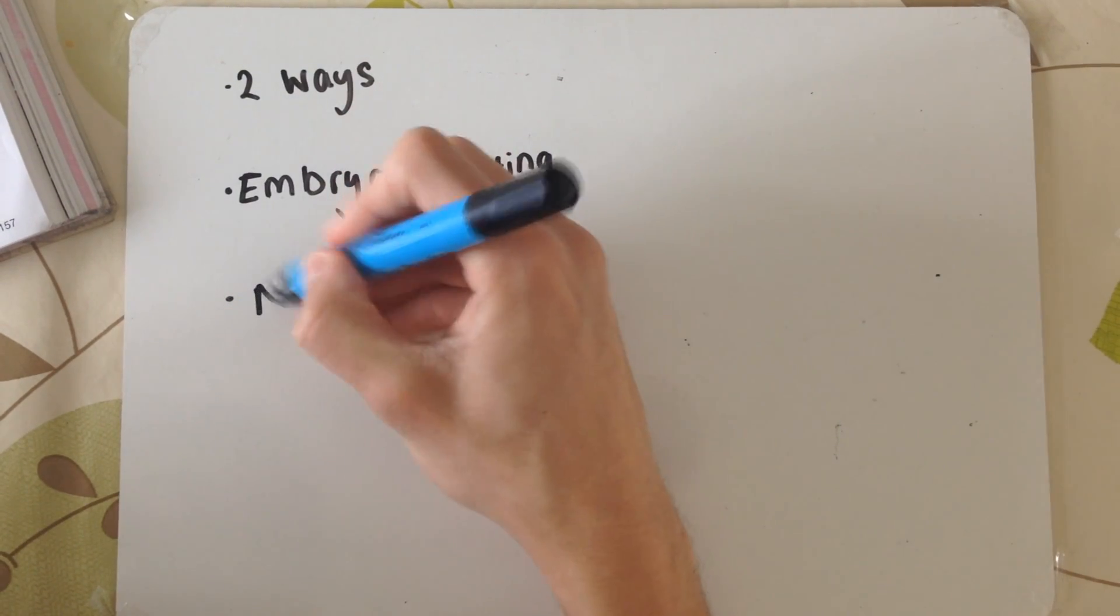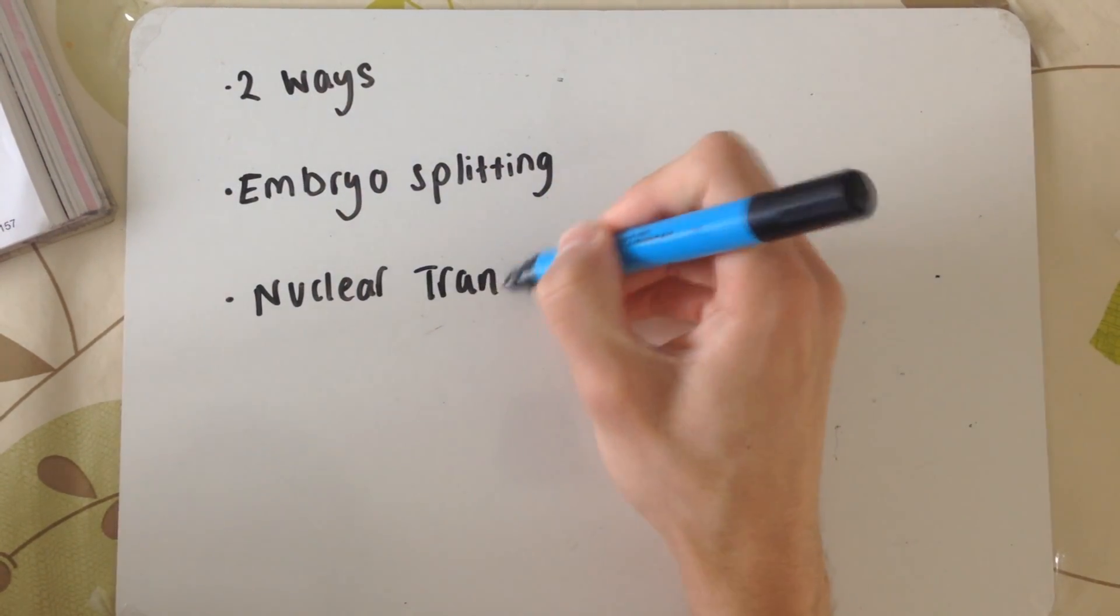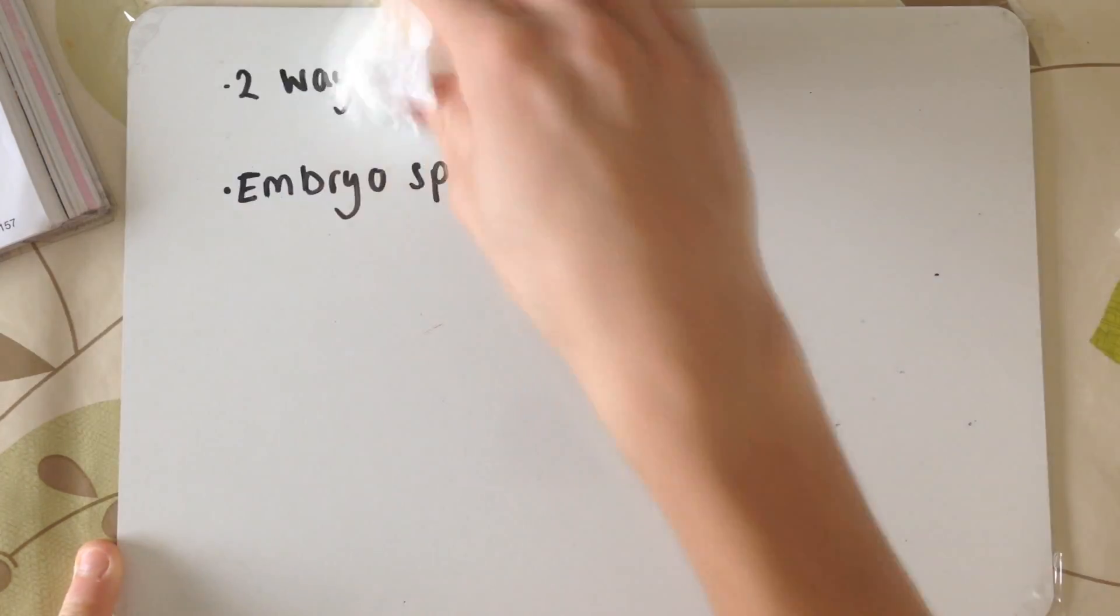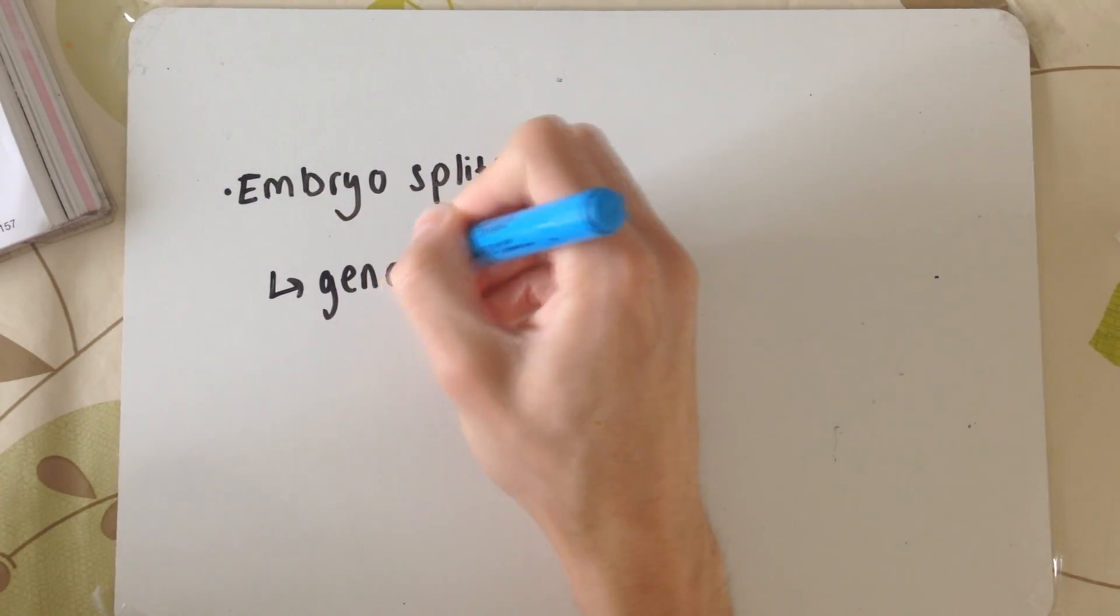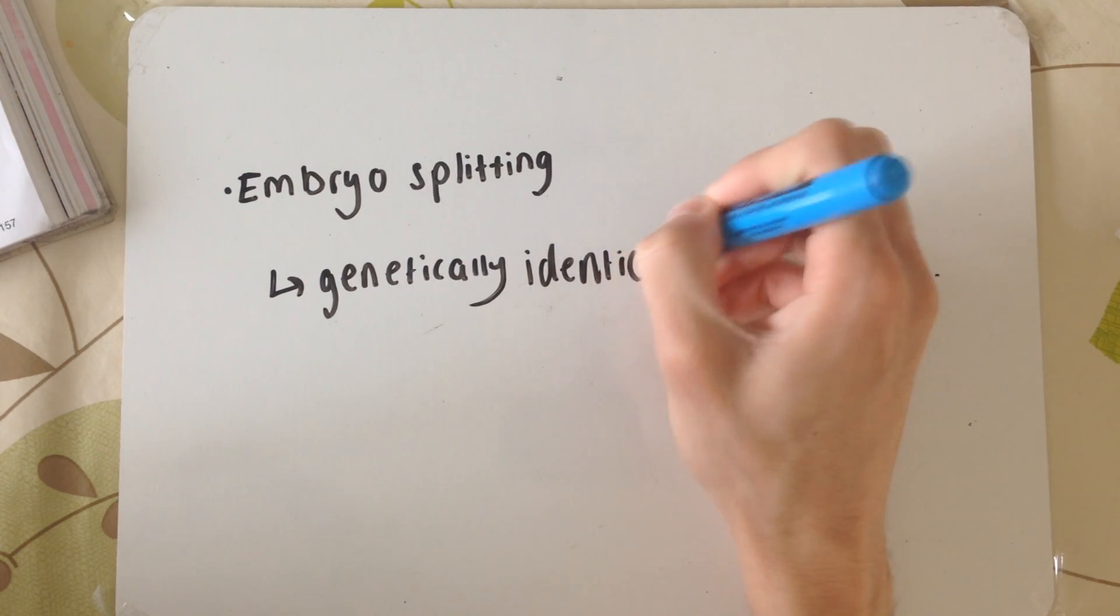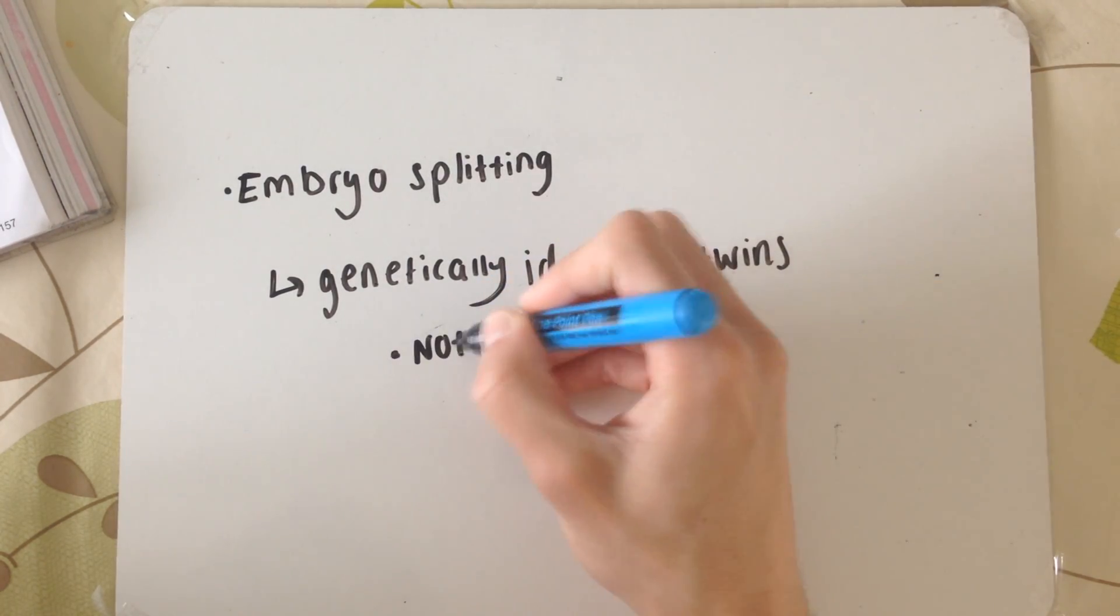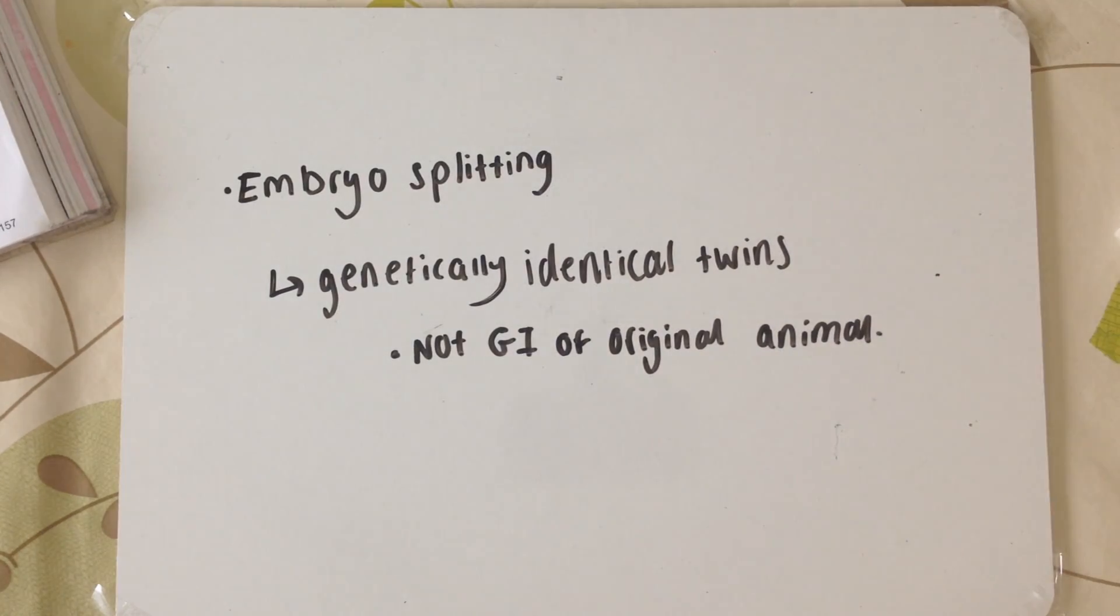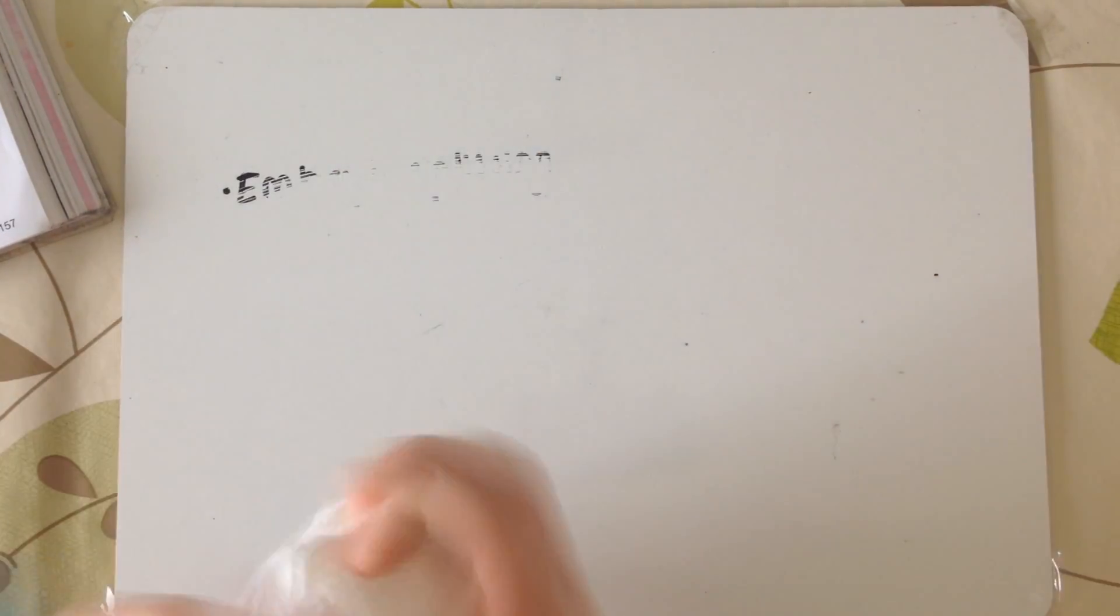There are two ways of reproductive cloning in animals. The first is embryo splitting, the second is nuclear transfer. Embryo splitting results in genetically identical offspring. The offspring are genetically identical to each other, but not actually identical to the parents.